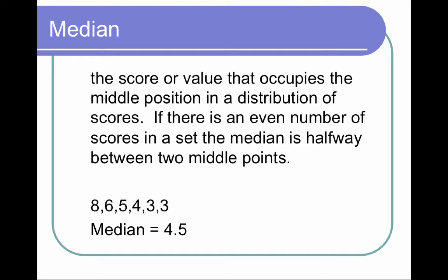The second type, again picture that umbrella. You've got the mean, the median, and the mode. The median is the score or value that occupies the middle position in a distribution of scores. If there's an even number of scores in a set, the median is halfway between those two points. In all cases, you have to put your scores in order from smallest to largest or largest to smallest. And then you have to find the middle point. This is an even set, and so the median for this set is 4.5.